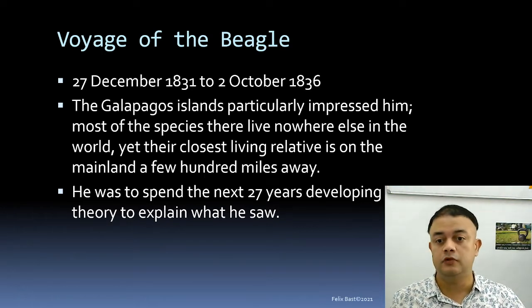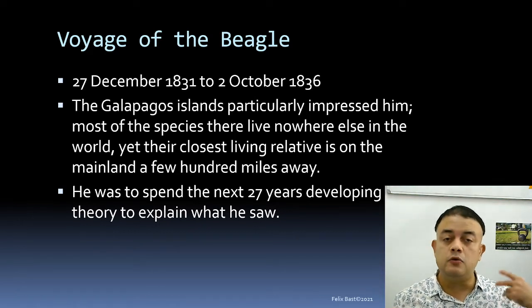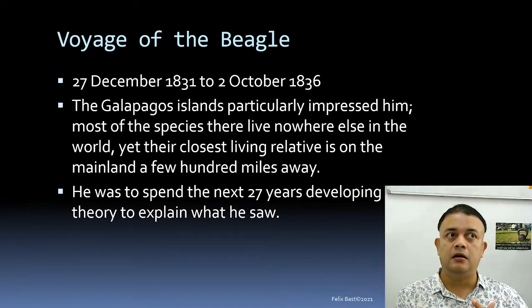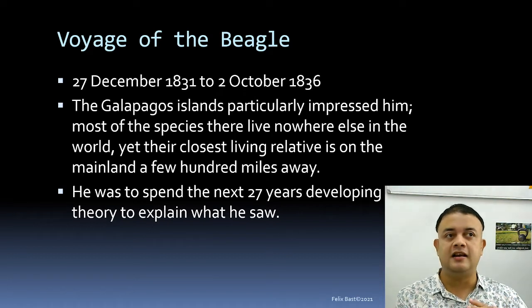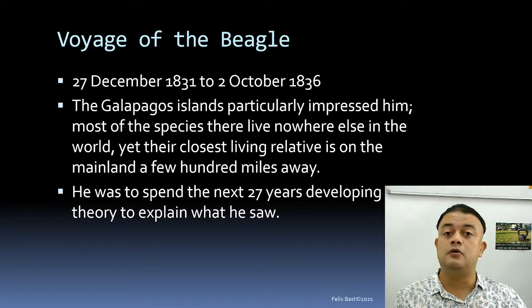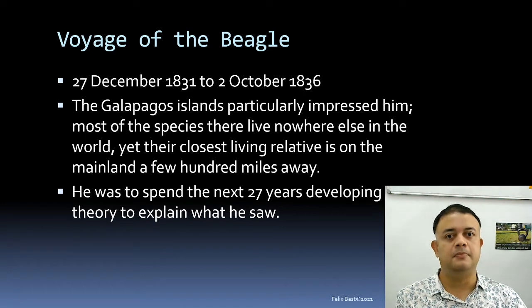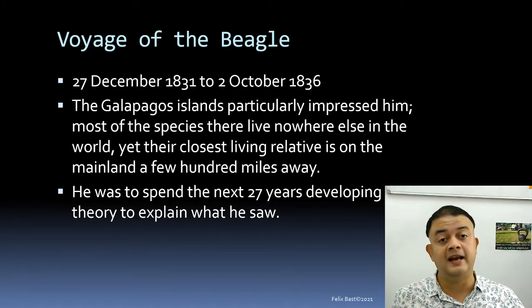The closest living relatives of Galapagos species are found on the mainland, a few hundred miles away in Chile and Peru. Darwin then spent the next 27 years developing a theory to explain what he saw. The theory didn't come from a tabula rasa — a blank slate. There were countless influences, like Malthus and Humboldt, but the theory of evolution by natural selection is very original.